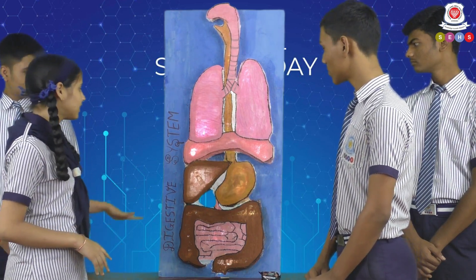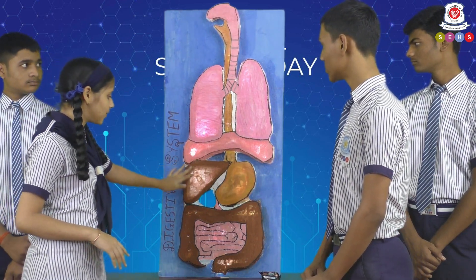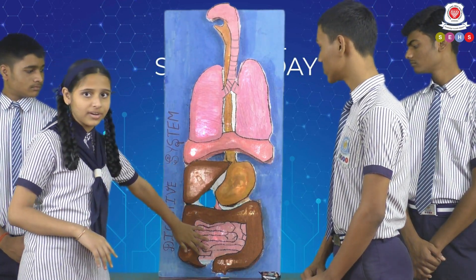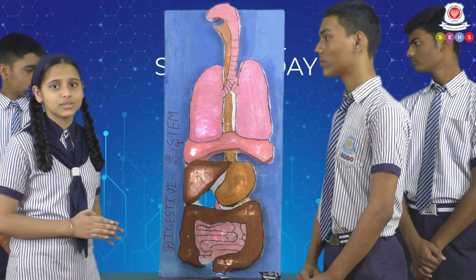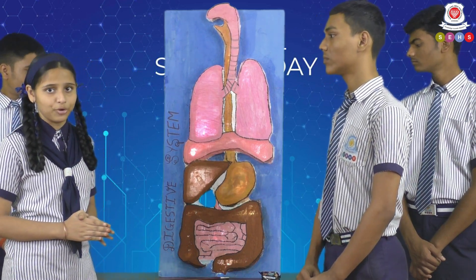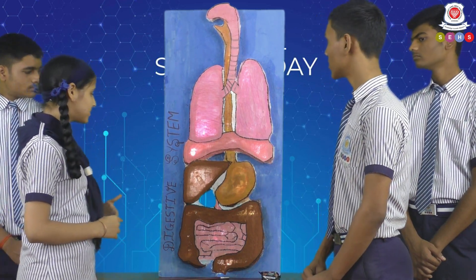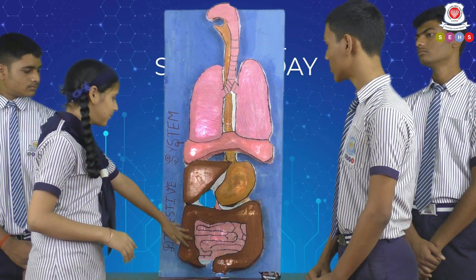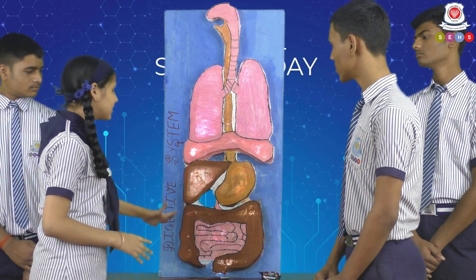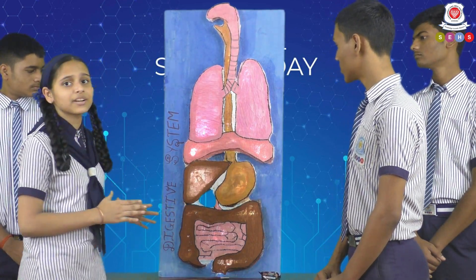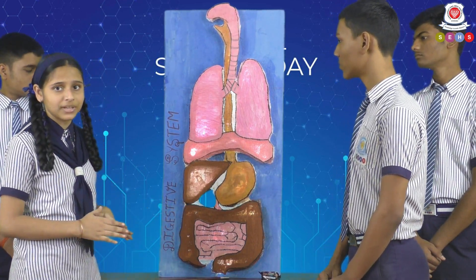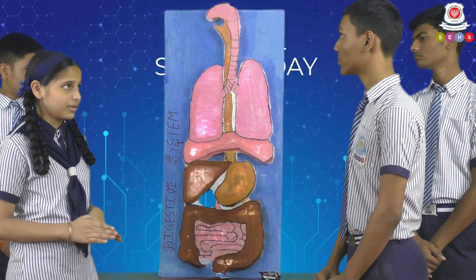From here, the undigested food enters into the small intestine. Small intestine is also known as the abdomen. Afterwards, it also helps and continues the breaking down of the food.